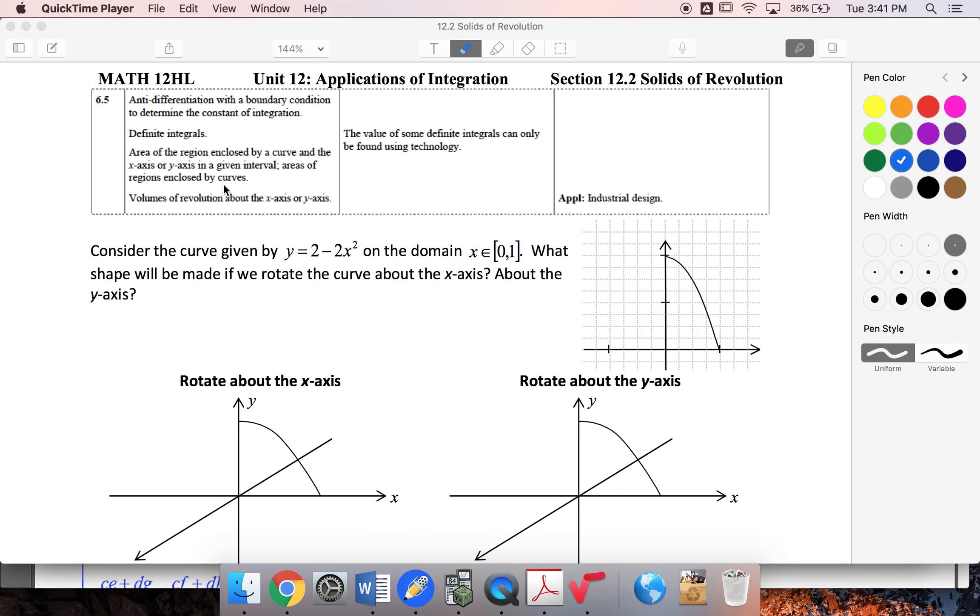Hello students, Ms. Sliman here, and we're going to be looking at volumes of revolution about the x or y axis. So we've got this curve, y = 2 - 2x², and we know that we've got this value up here of 2, down here is 1, if we go from 0 to 1.